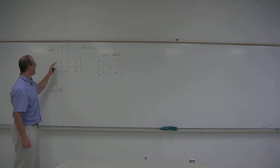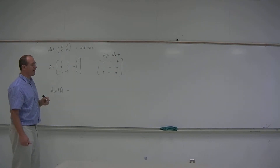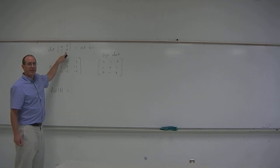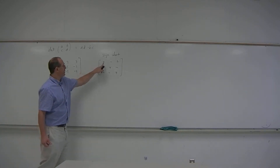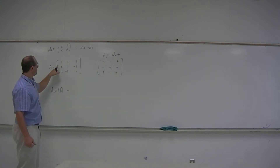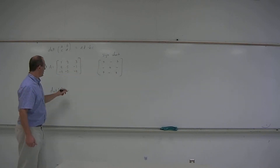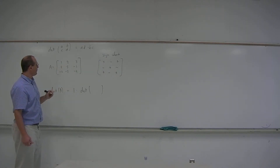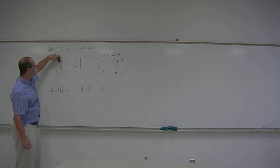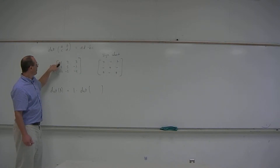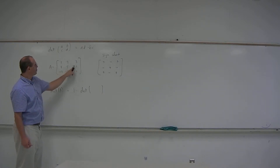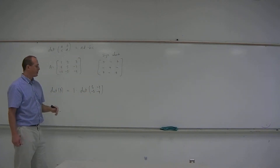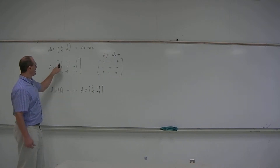The way it works is you take any row or any column. I'll do a Laplace expansion about the first row. You take each number in the row and multiply it by the determinant of a 2 by 2 submatrix, adding or subtracting according to the sign chart. Across the first row, 1 goes with a plus, so we have 1 times the determinant of the 2 by 2 submatrix obtained by eliminating the first row and the first column, which gives us 5, negative 1, negative 3, negative 4.